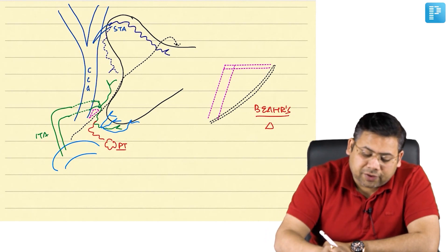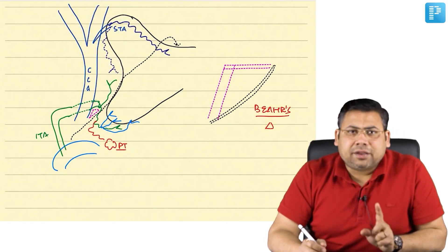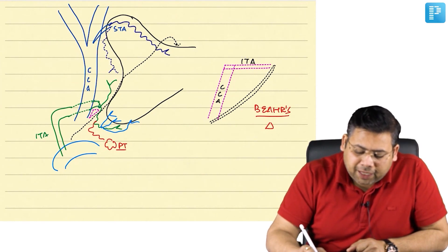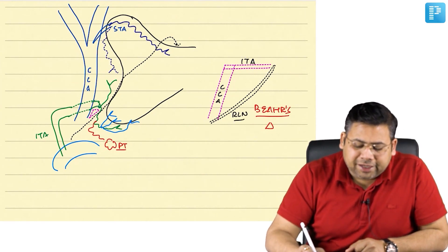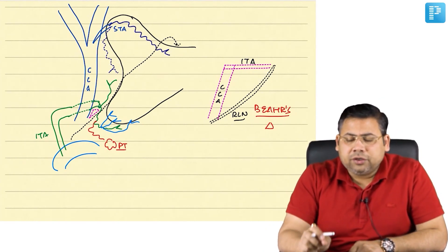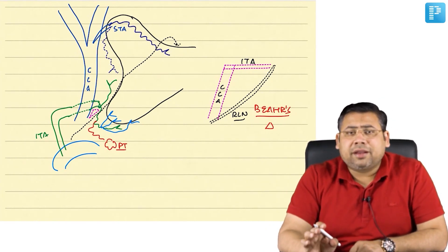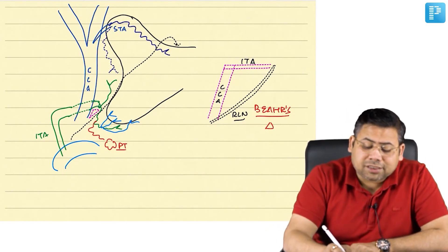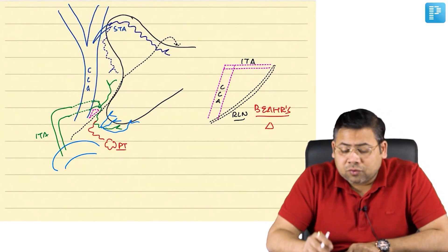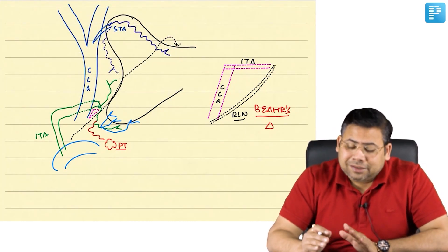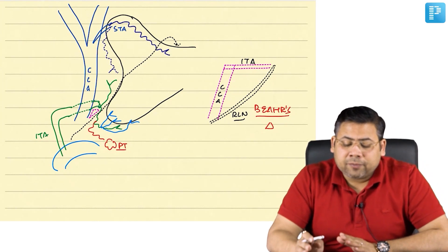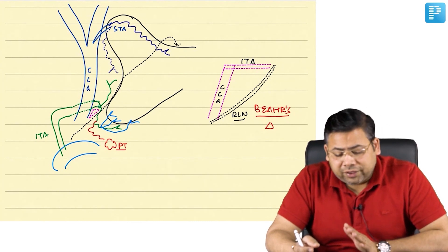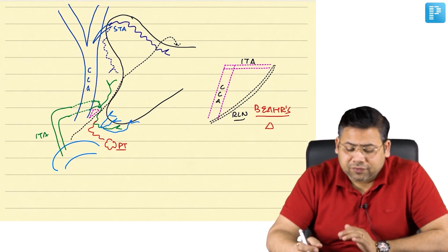What is the significance of Biard's triangle? No dissection is to be done here — it is bounded by the common carotid artery, inferior thyroid artery, and recurrent laryngeal nerve. Any dissection done in this part is going to damage the recurrent laryngeal nerve. This anatomy is very important.